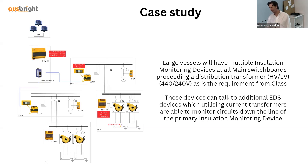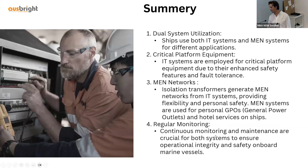All modern insulation monitoring devices are now connected to the platform management system, so maintainers are continually getting updates on the condition of insulation across the vessel, as all devices can now communicate via Ethernet bus or Modbus. IT systems are used on vessels, while MEN systems are also used on vessels but mainly in areas where distribution is for hotel services or GPOs for cabins — and you'll have a mix of both networks using isolation transformers to reintroduce the Earth-neutral link.